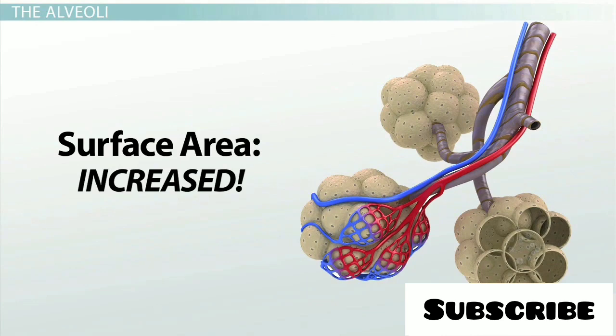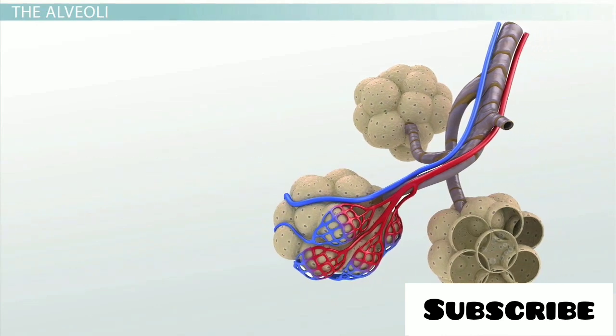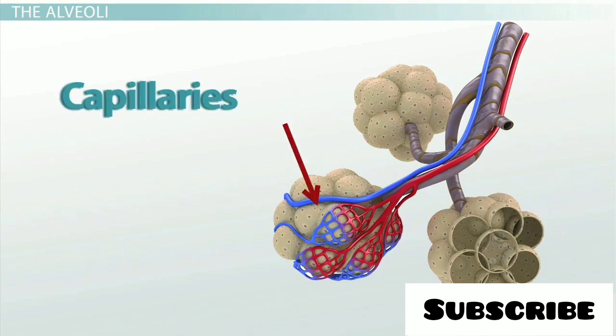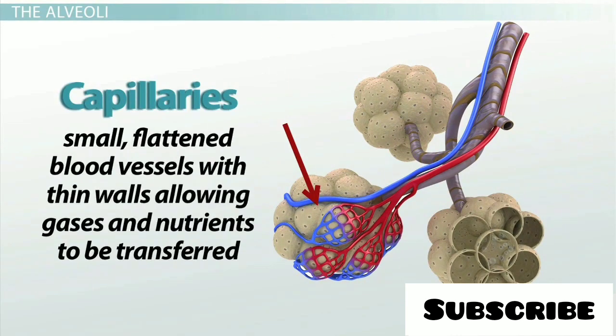But how do the lungs take oxygen out of the air and get it into the bloodstream? Well, surrounding the alveoli is a very dense network of capillaries. You may remember that capillaries are very small, flattened blood vessels with very thin walls, which allow gases and nutrients to be easily transferred between the blood and surrounding tissues.